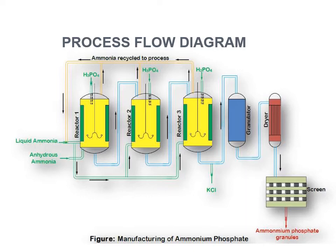If diammonium phosphate is to be produced, a larger concentration of ammonia is required, so ammonia is also introduced from the bottom of the second and third reactors. The excess quantity of ammonia is collected from the top of the reactor and recycled to the first reactor, so the ammonia recycling process is carried out at the top of the column.